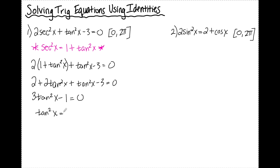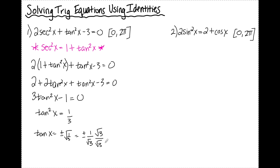Now I can solve this using order of operations backwards. I add the 1, divide by 3, take the square root, and I get plus or minus the square root of 1 over 3, which equals plus or minus 1 over the square root of 3. This isn't an exact value I know, so I'm going to rationalize by multiplying by √3 over √3, giving me tan x equals plus or minus √3 over 3.